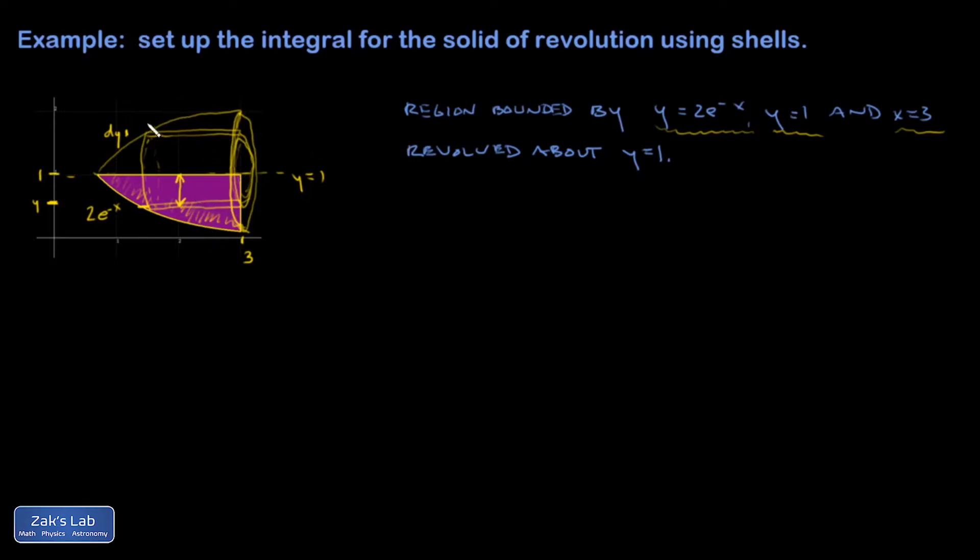One of the really tricky things about this problem is I've got to figure out the length of these shells. And that's a horizontal distance between x equals 3 and then the x value corresponding to that y. So we've got to take that y coordinate and invert and go back to the x coordinate that it came from.